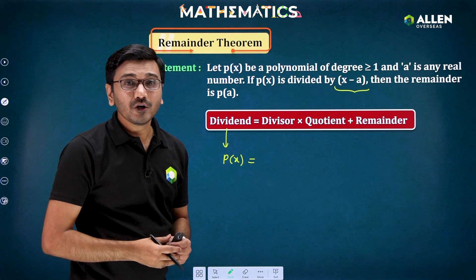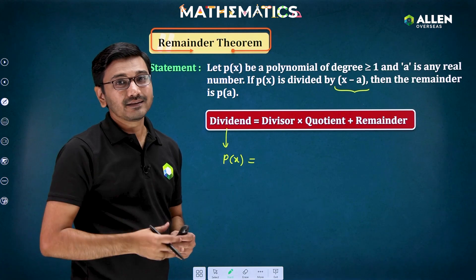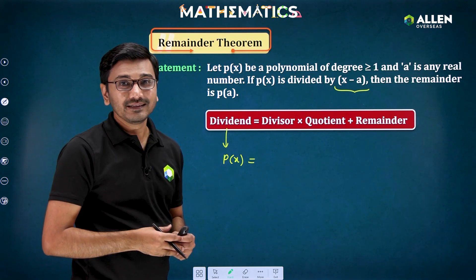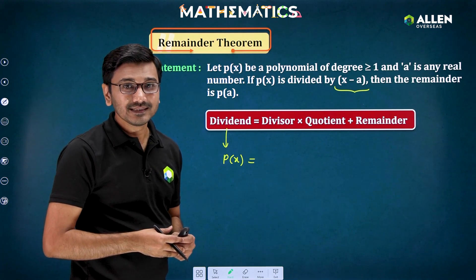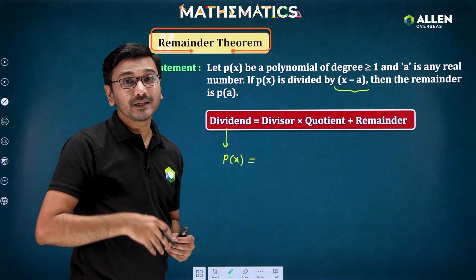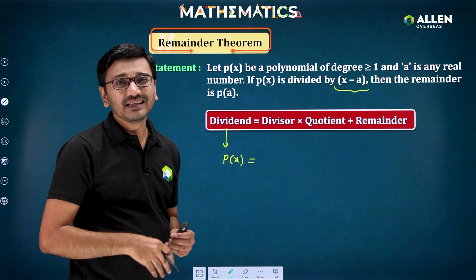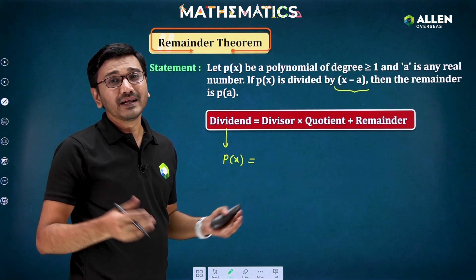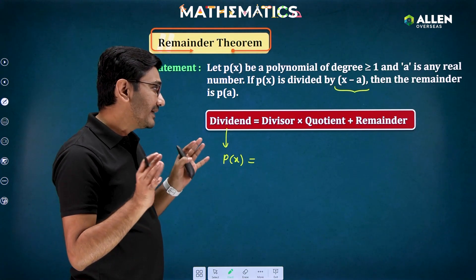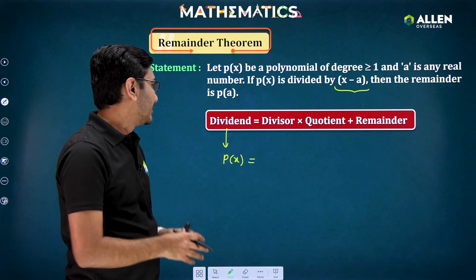But when you divide a polynomial by a quadratic function, the remainder you will get is linear at the most. And if you are dividing a polynomial by a cubic function, then you can get the remainder at most quadratic. So that is the thing you should understand.